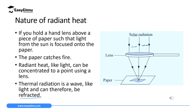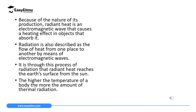Refraction means changing the direction of light, or in this case of radiant heat. Since radiant heat can be converged to one point and cause a heating effect, and also does not require a material medium for transmission, we can conclude that radiant heat is a good example of electromagnetic waves — waves which do not require any material medium for transmission.